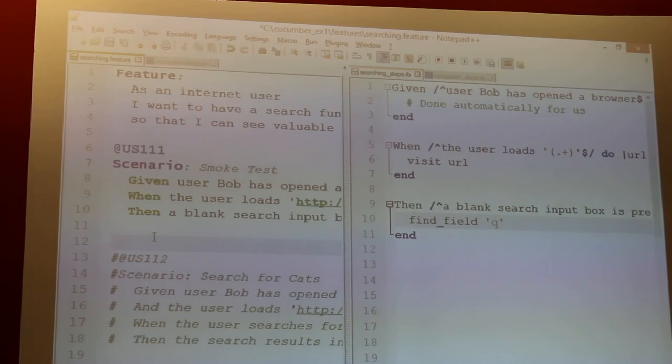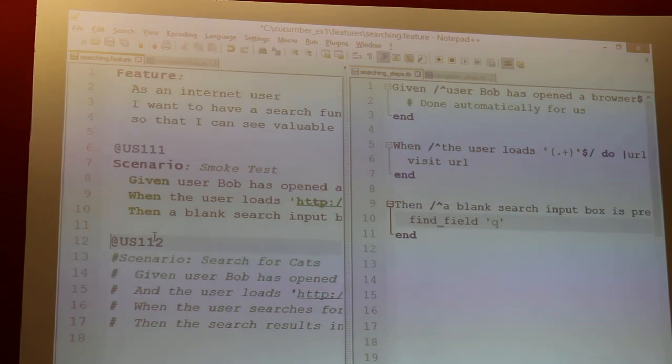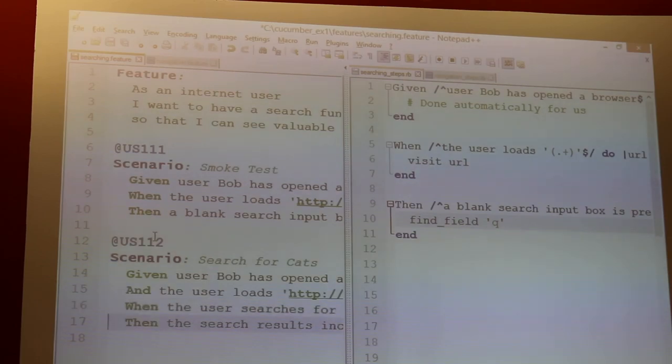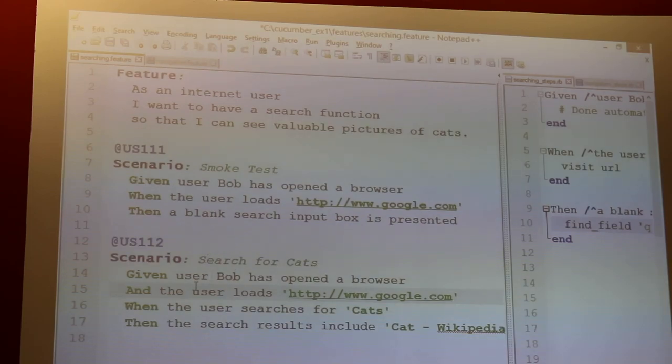And I'm going to enable it. This is a tag, this at symbol. So I'm actually kind of showing what user story it goes with in case we want traceability. And this one says, this is an actual search. So it's more than a smoke test. So given user Bob has opened the browser and the user loads Google.com, when the user searches for cats, then the search results include cat-wikipedia. So I don't have definitions for these last two steps yet because I've defined the behavior before I've implemented the code. So let's save this and see what Cucumber does when there are no definitions for some of the steps.